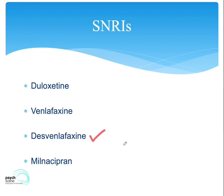Desvenlafaxine is a metabolite of venlafaxine, and it tends to have a noradrenergic and dopaminergic effect at the initial dose of 50. The dose goes up to 100 and 150 milligrams. One of the advantages is that it's not broken down by the CYP enzymes in the liver, and hence can be used in conditions where liver dysfunction may be an issue.